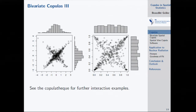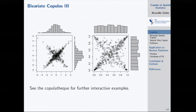The copula is independent of the marginal distribution, so you can attach any marginal distribution to a copula and get something new. Conversely, you can remove marginal distributions using the cumulative distribution function to get back to the copula and reconstruct the dependence structure.